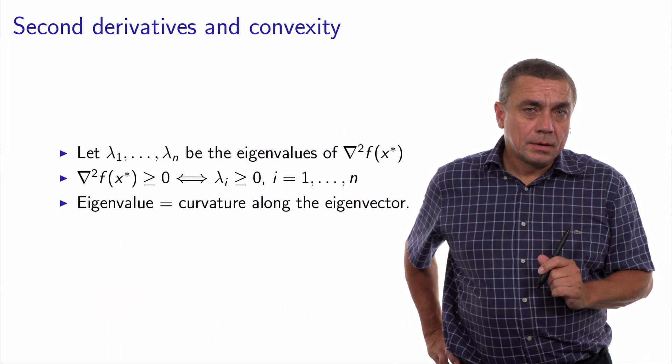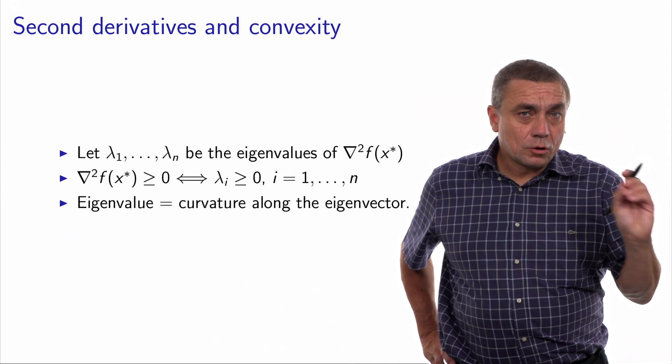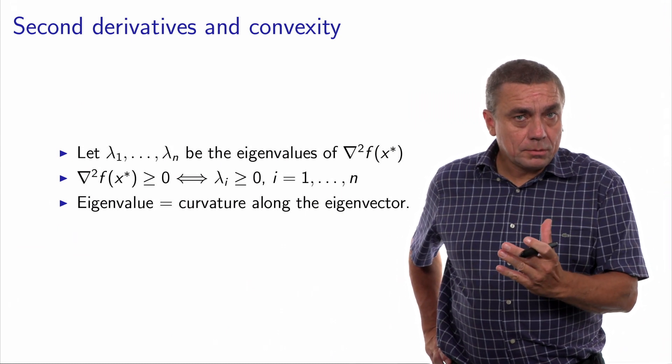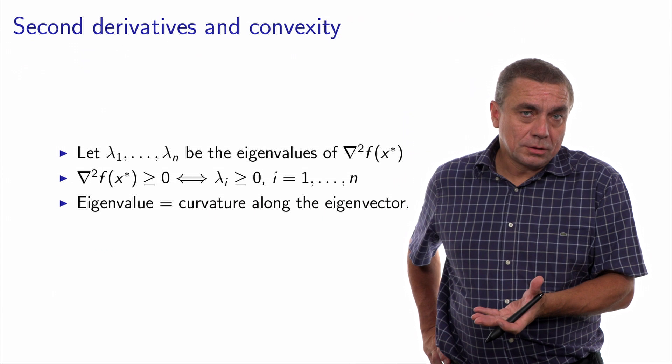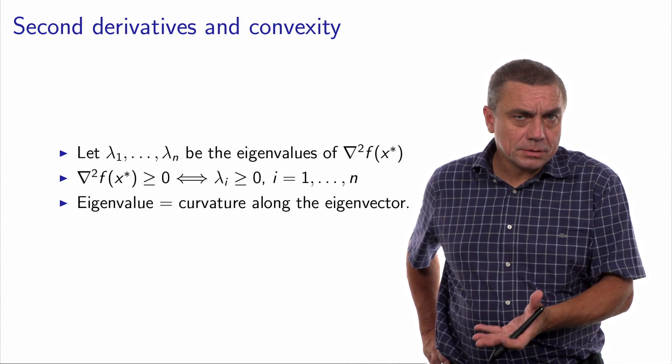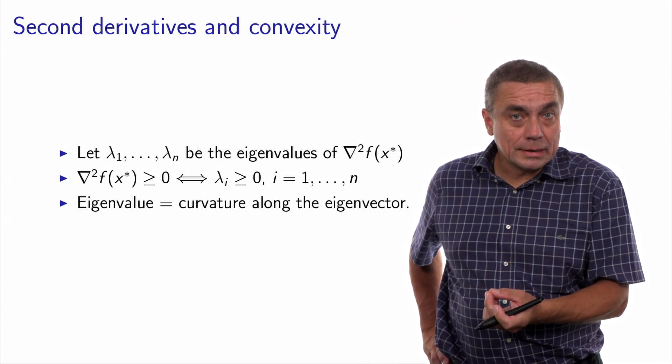So this means that if x star is a local optimum, a local minimum, then because the second derivative matrix is semi-definite positive, it means that the function is locally convex. It is convex in all directions at x star.